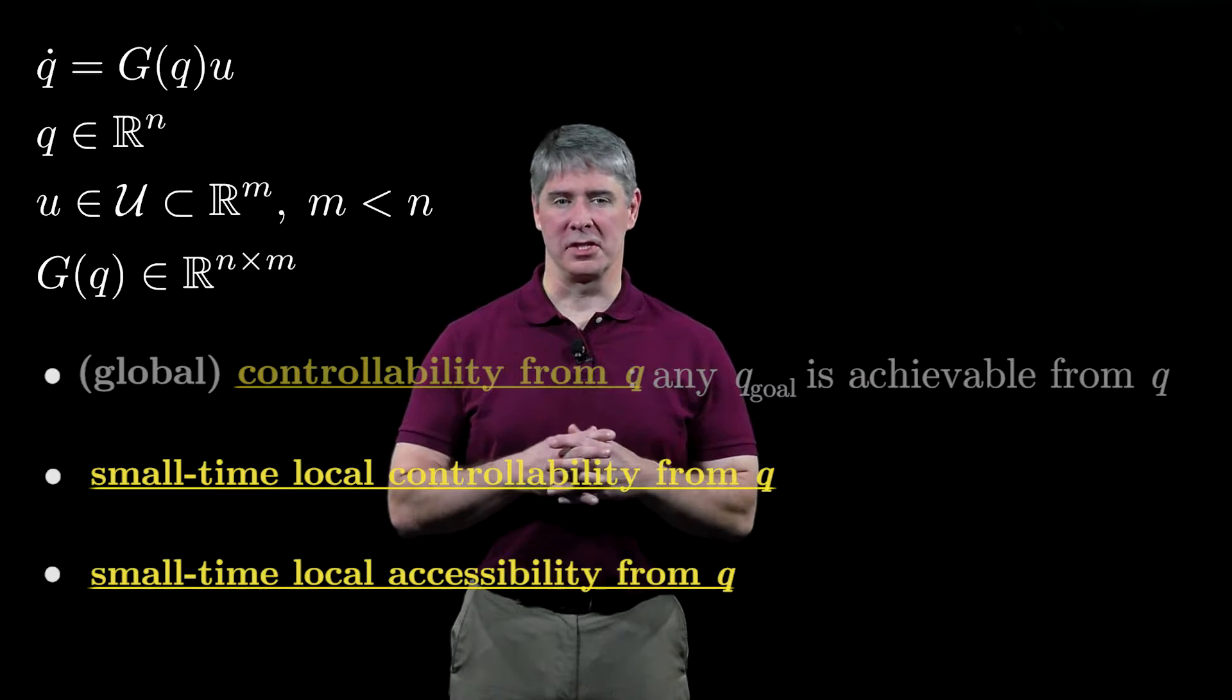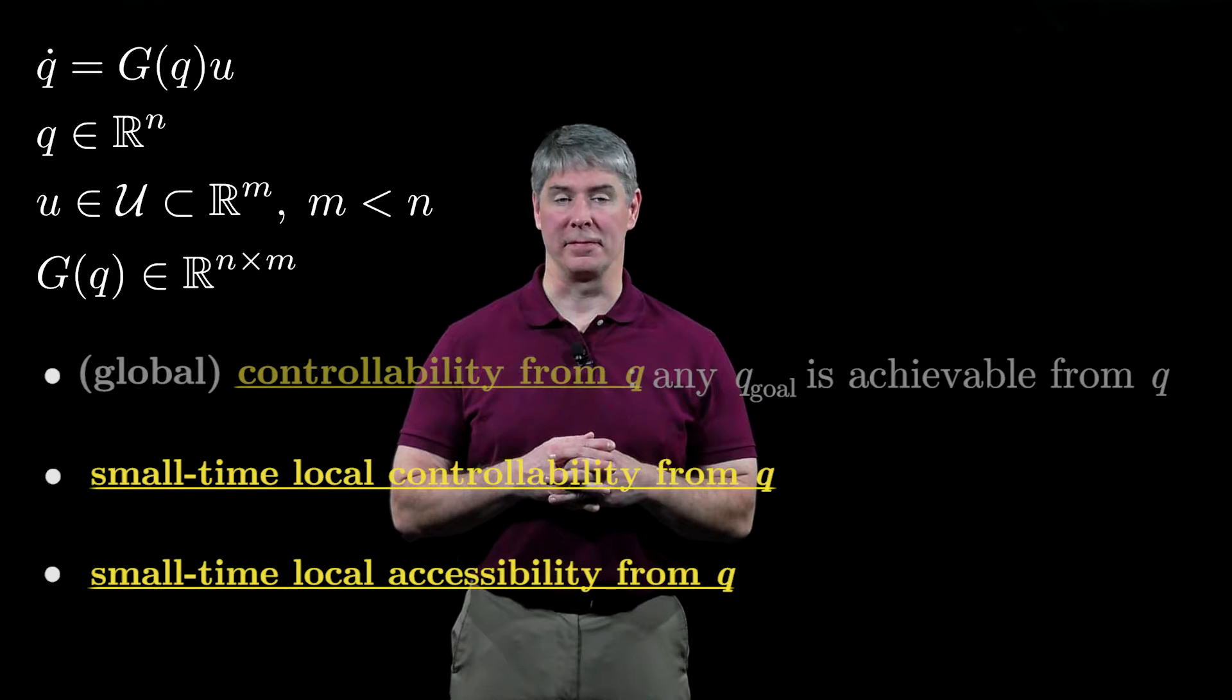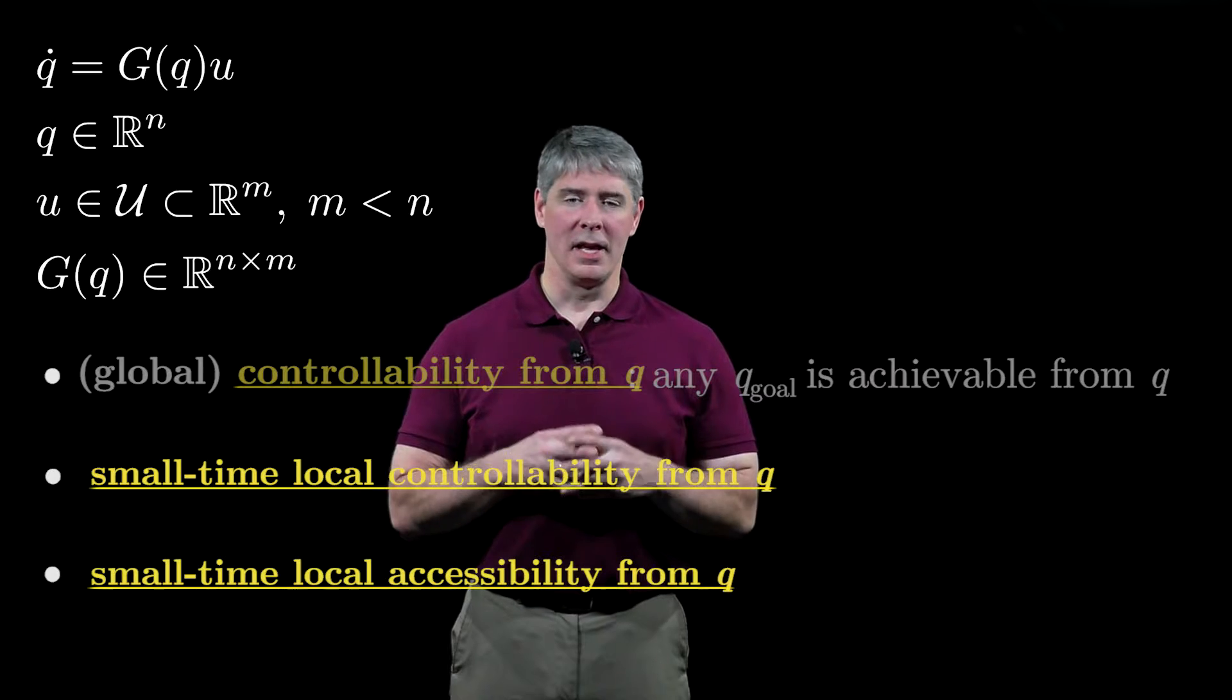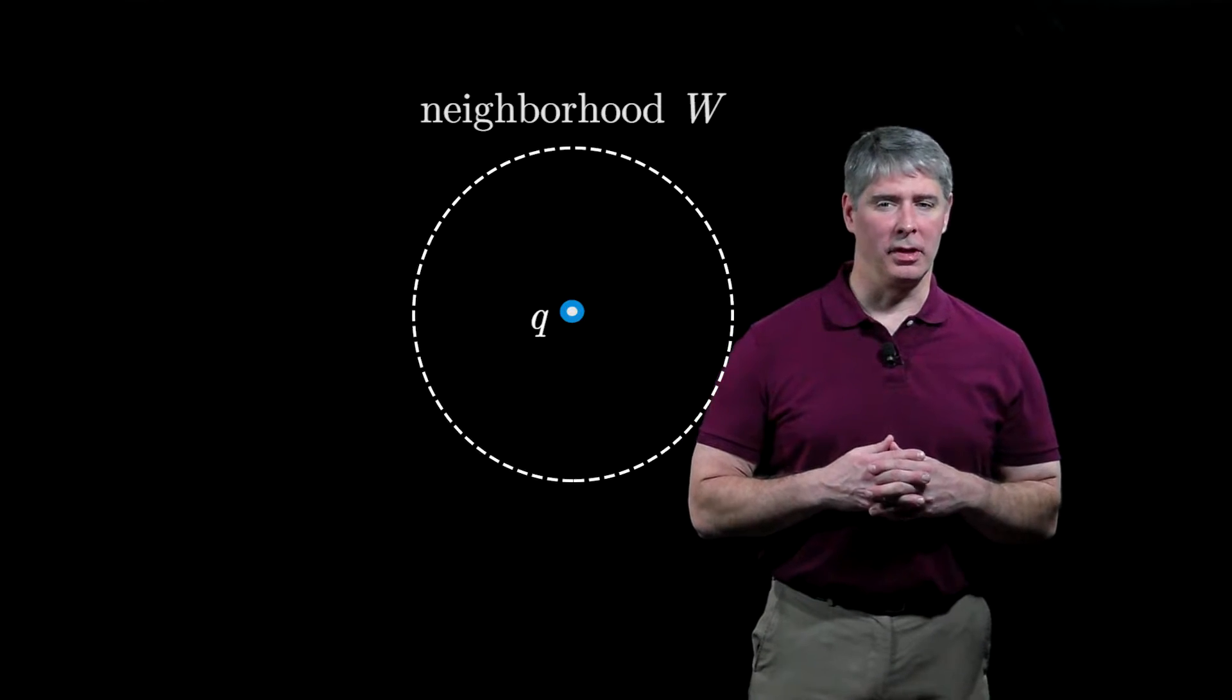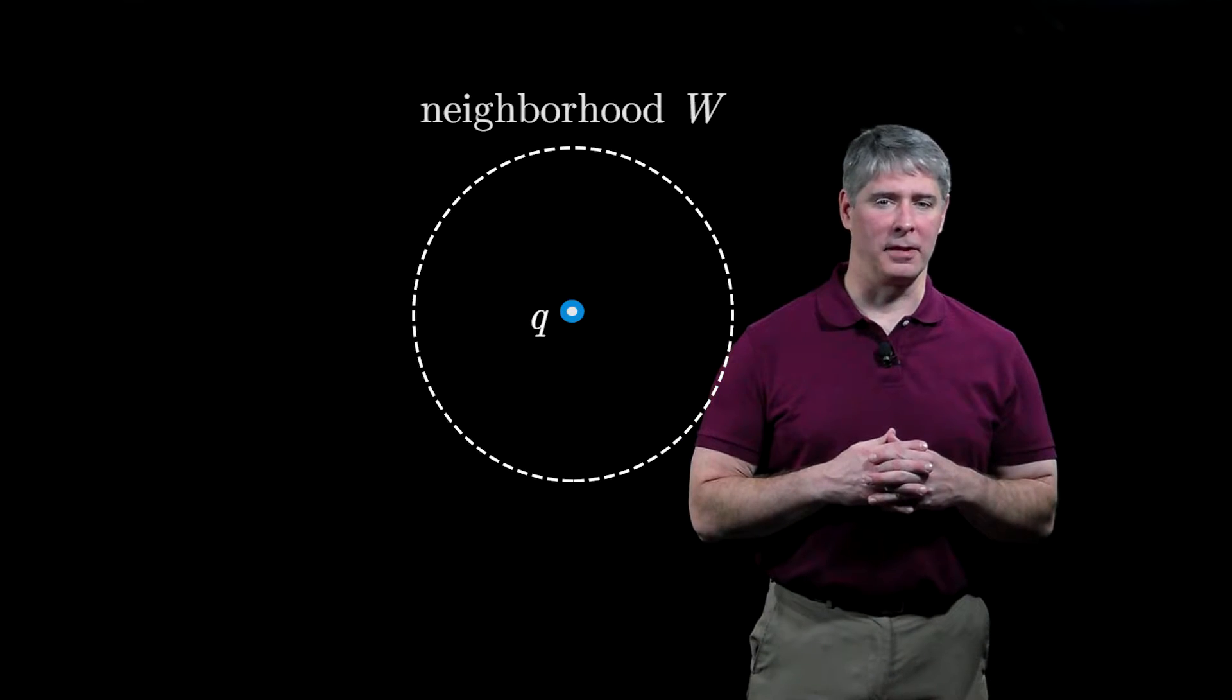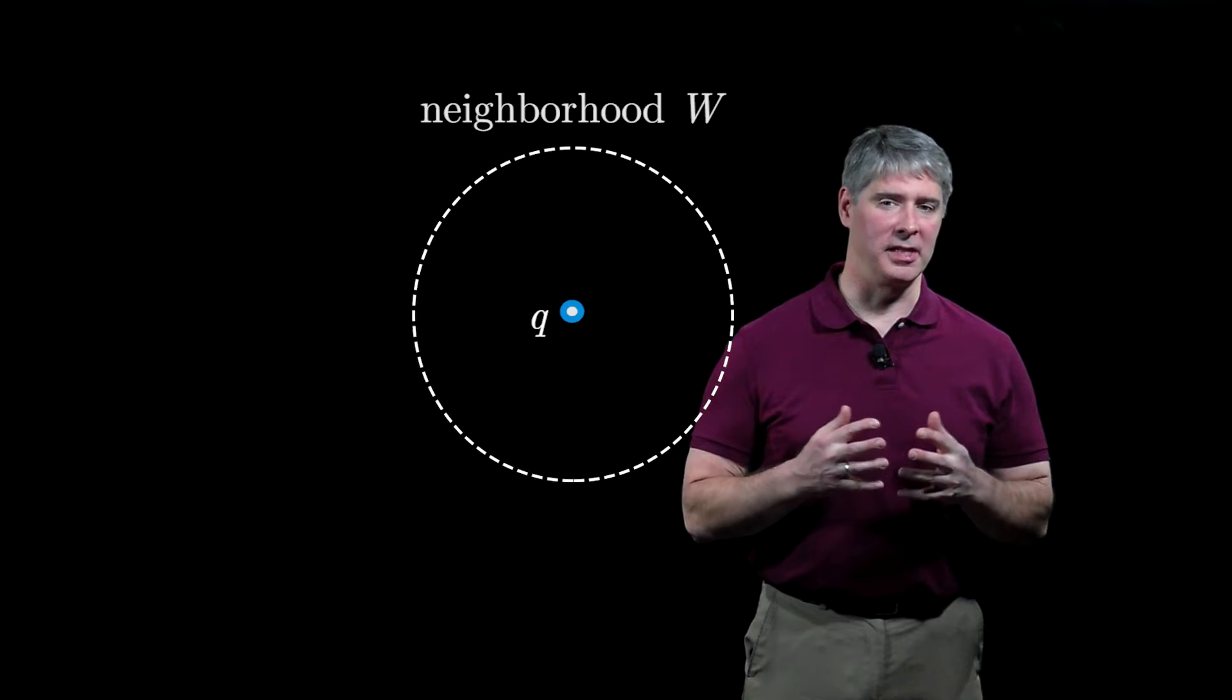For the local definitions of controllability, let's first establish the concept of a reachable set. Consider a configuration q in the two-dimensional space of your screen, define a neighborhood W of q, a full-dimensional open ball of the configuration space with q in its interior.